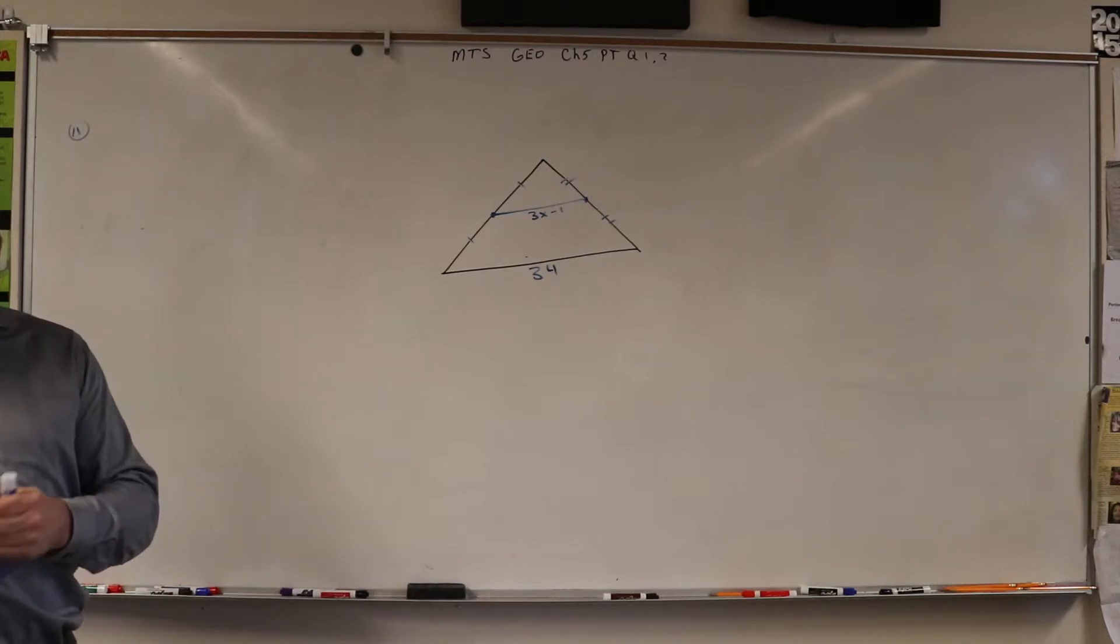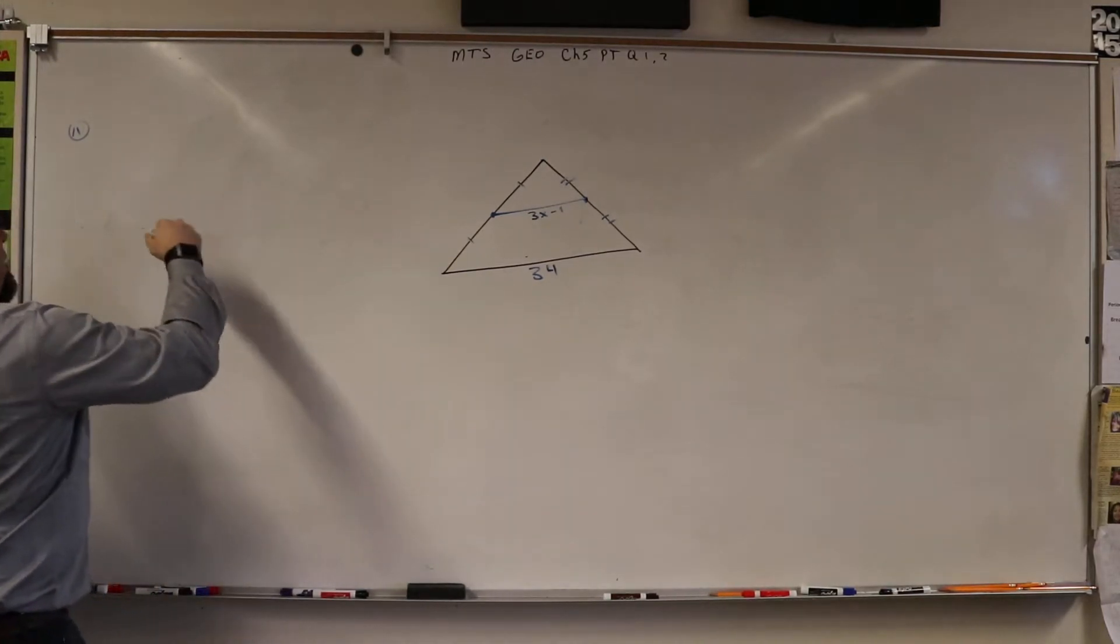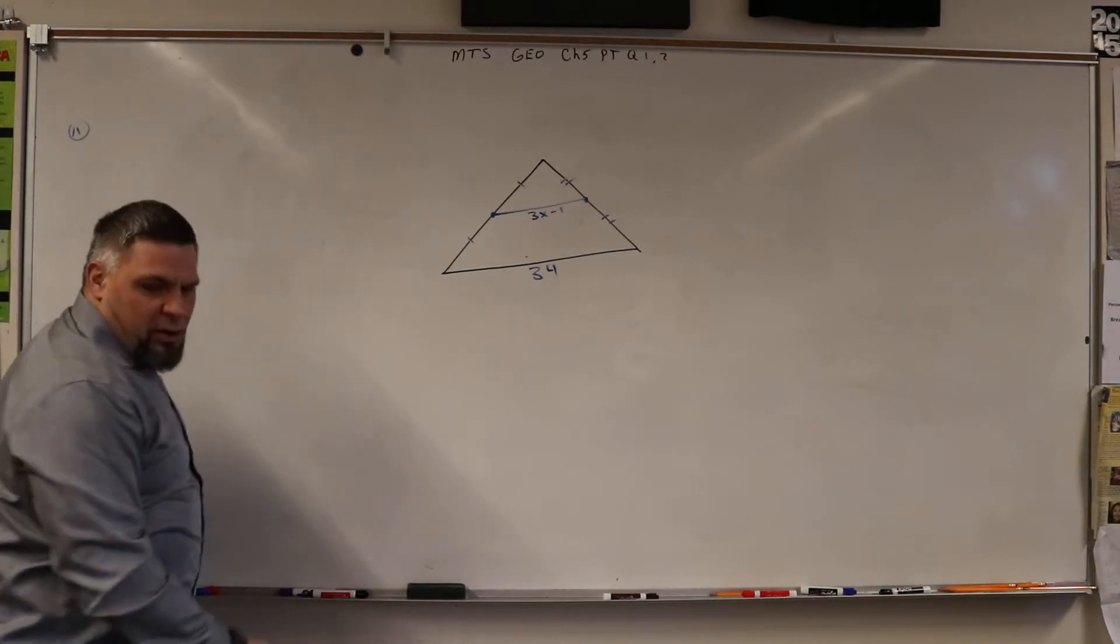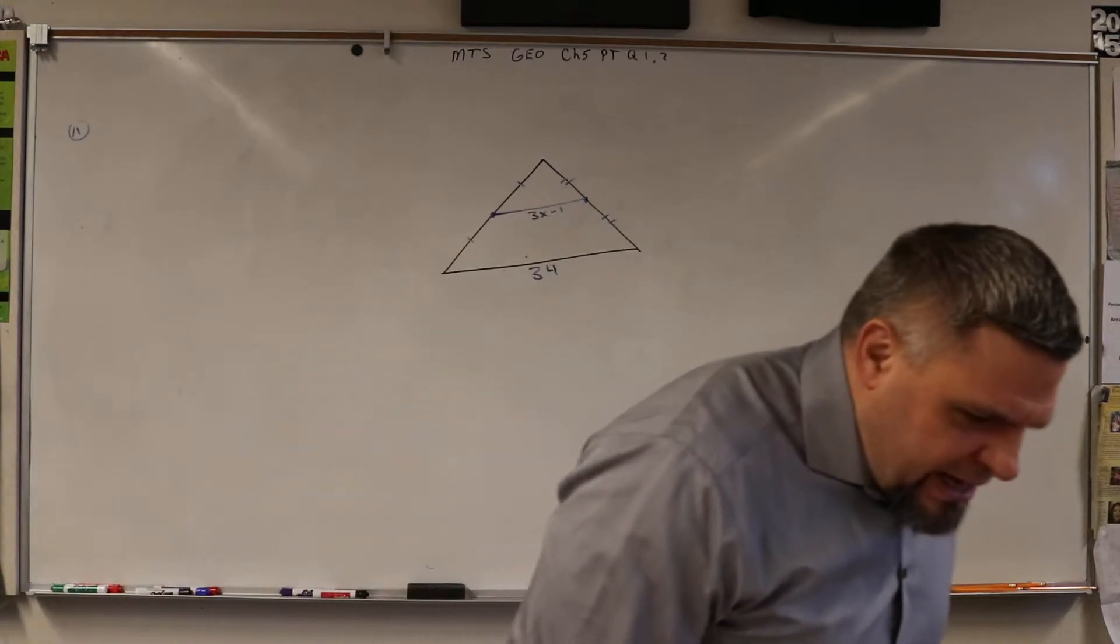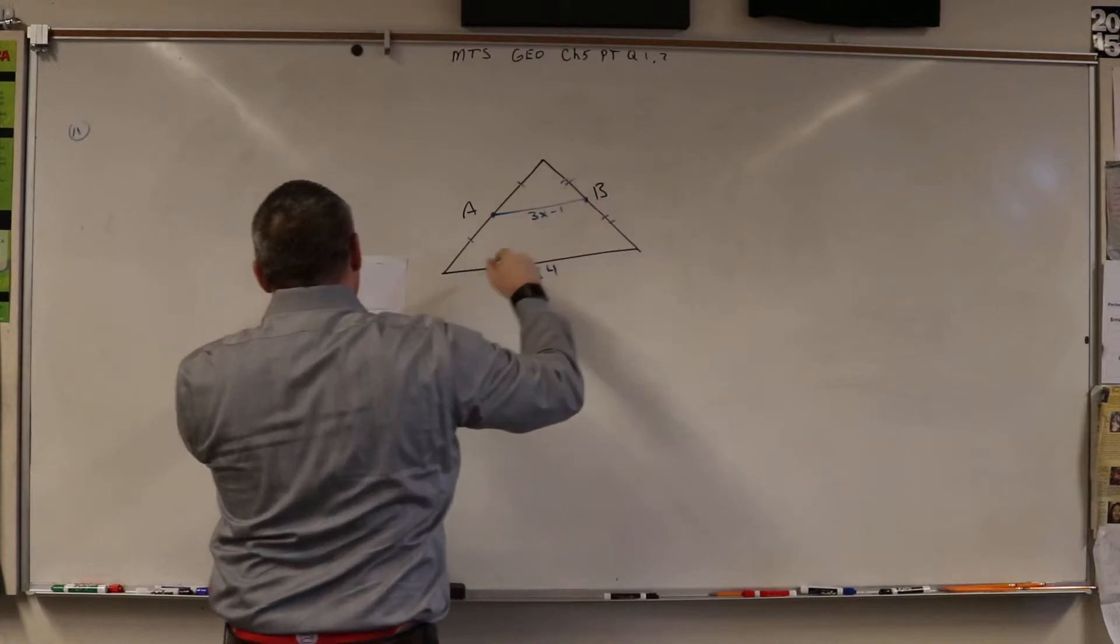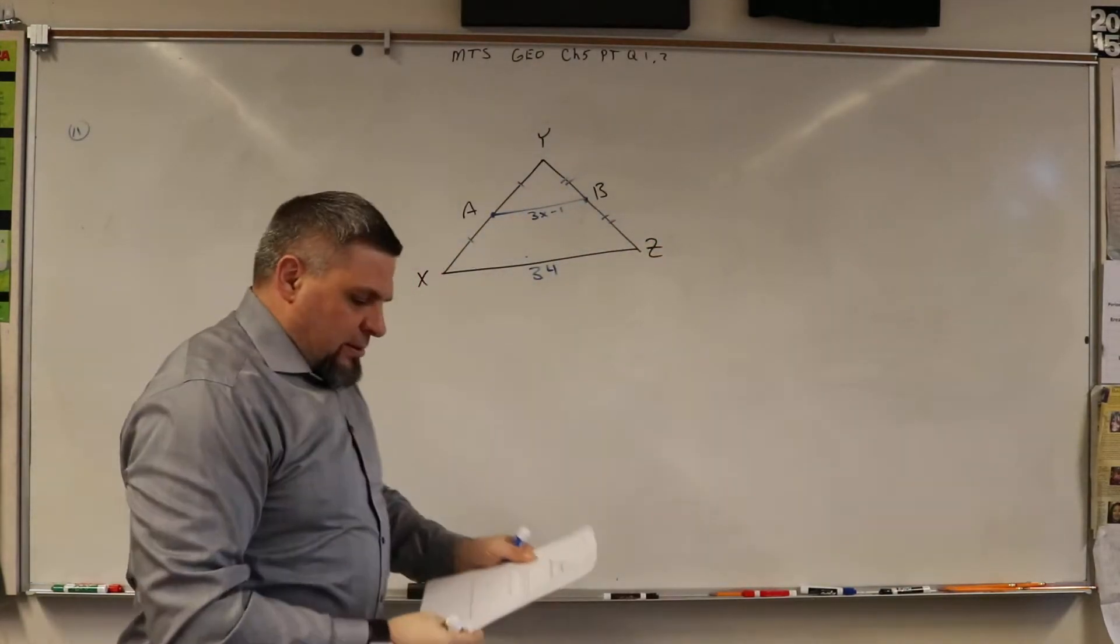Now the segment bisector theorem says this. Are there A, B, and C on this? So this is A, B, X, Y, and Z.